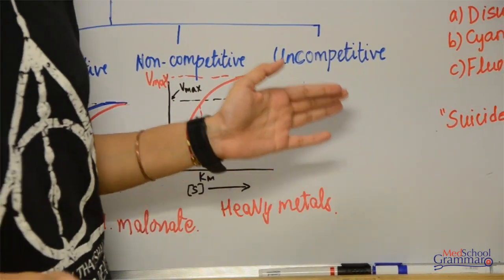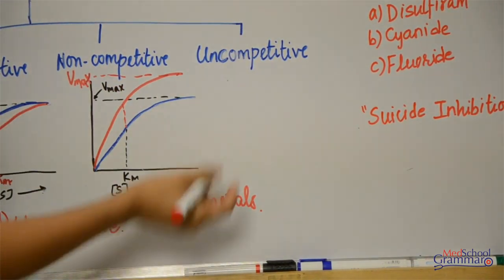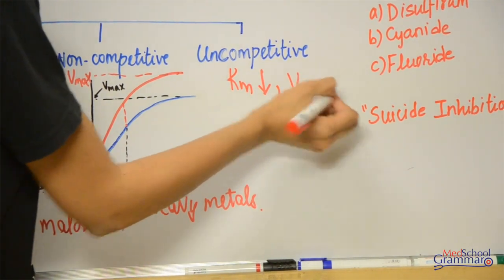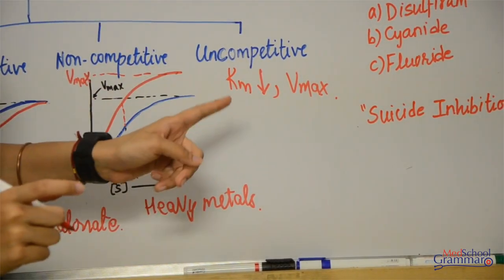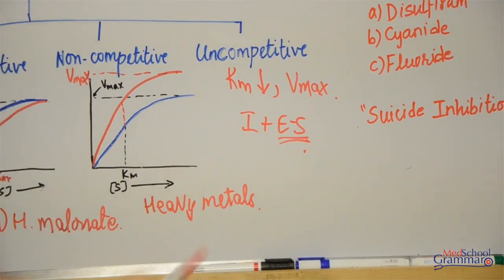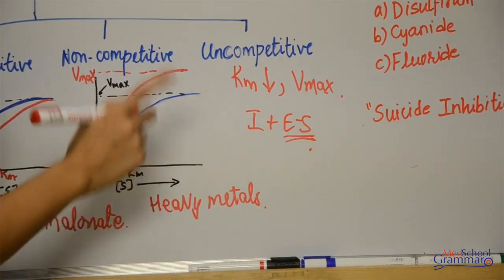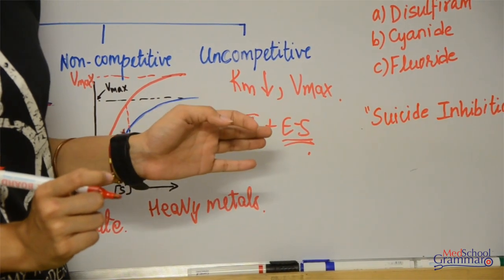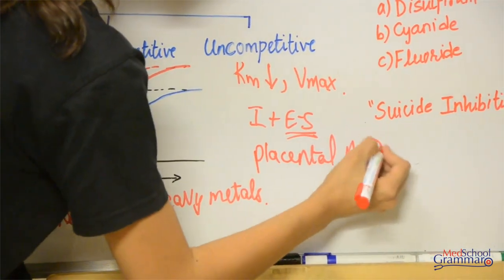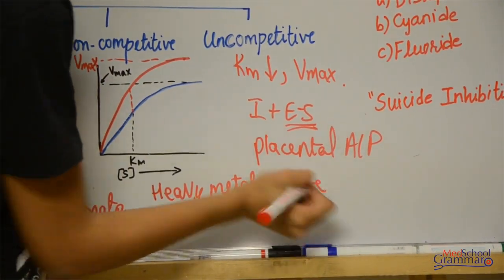We move on to the third type of reversible inhibition, that is uncompetitive enzyme inhibition. In uncompetitive enzyme inhibition, your Km value decreases and Vmax decreases as well — both of these decrease. In uncompetitive inhibition, your inhibitor binds with a preformed enzyme-substrate complex; it does not bind with a free enzyme. An example of uncompetitive inhibition is placental alkaline phosphatase, which is inhibited by phenylalanine.